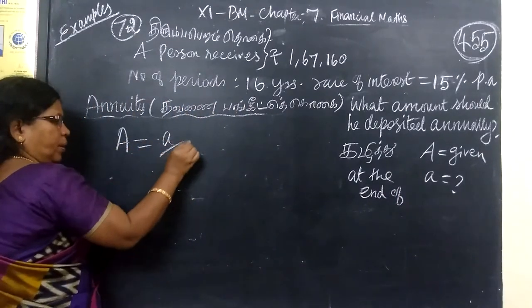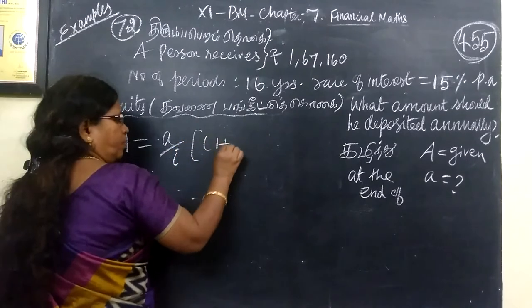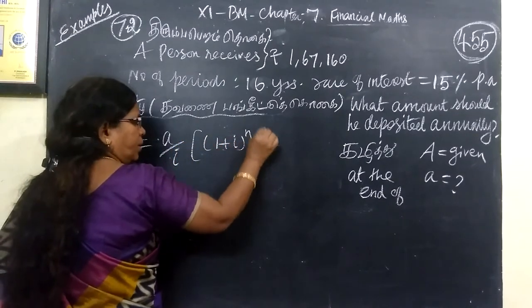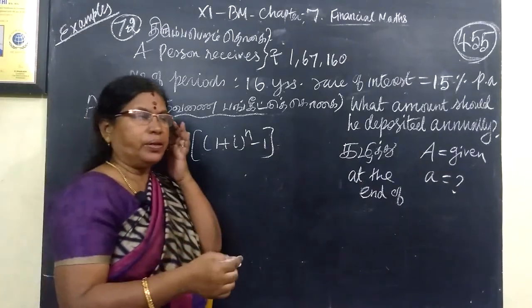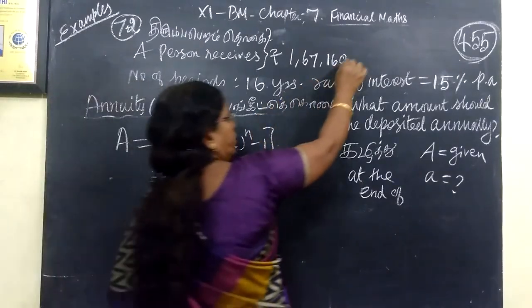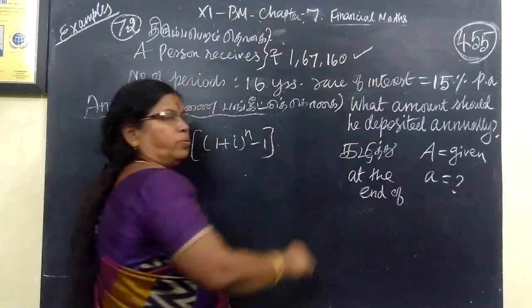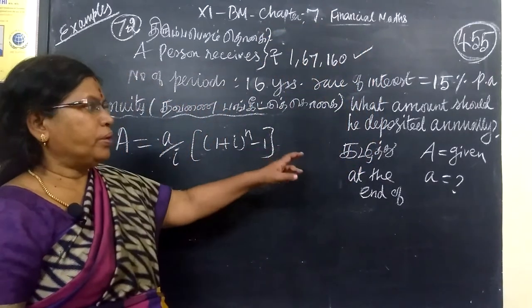A by a, then 1 plus i whole power n minus 1. 16th year, at the end of 16 years he is receiving this amount. What amount should he deposit annually?